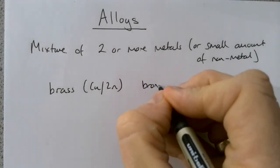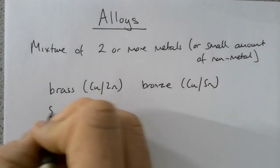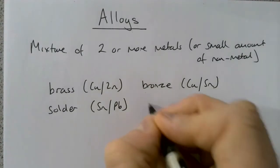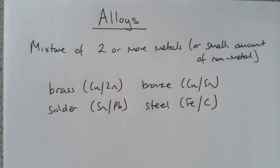Bronze, which is a mixture of copper and tin. Solder, which is a mixture of tin and lead. Steel, which is a mixture of iron and carbon.